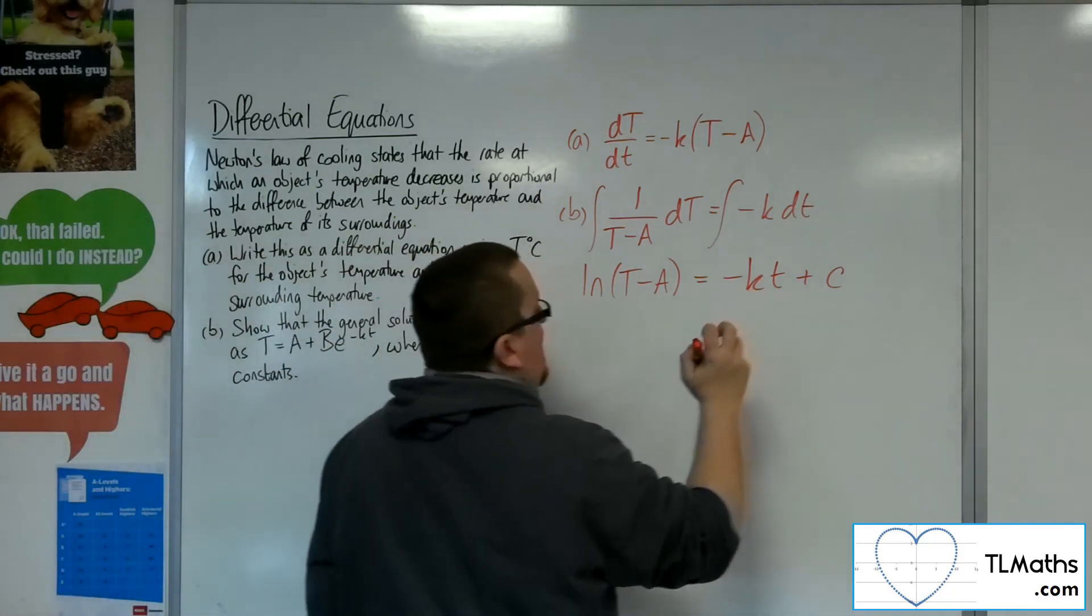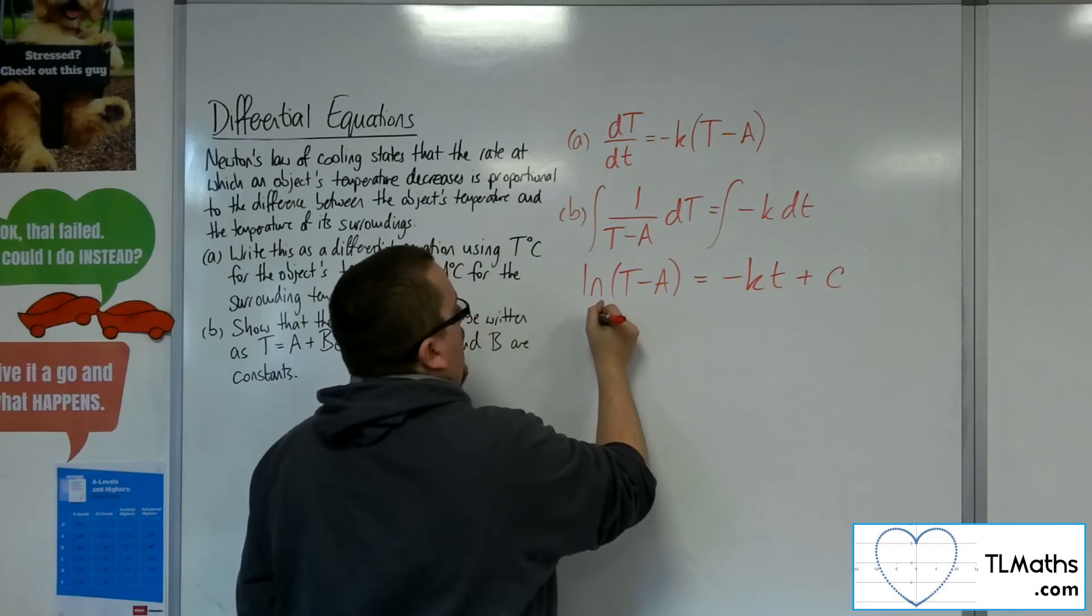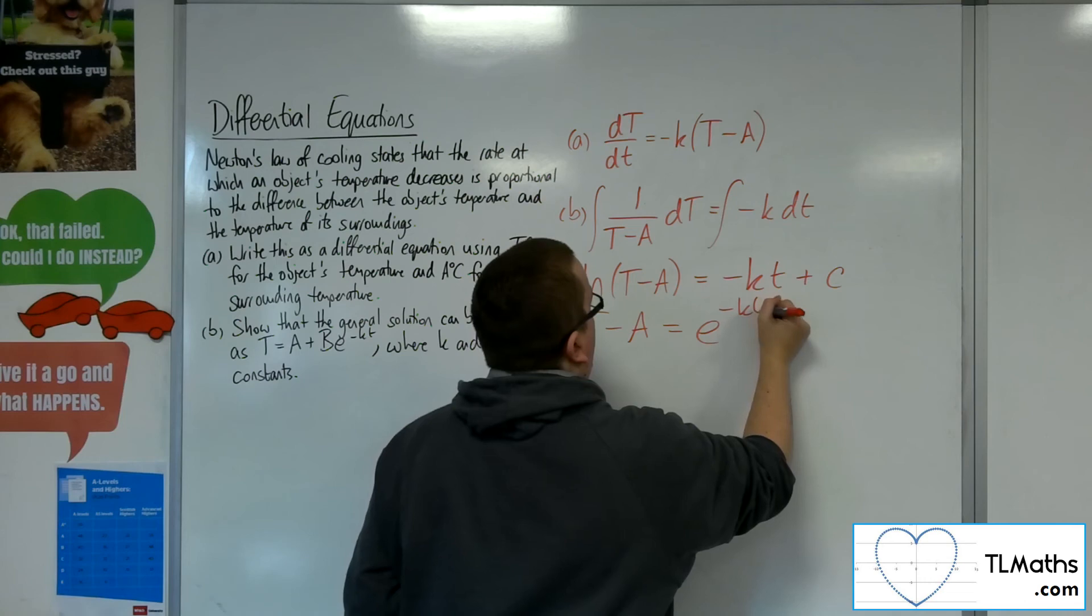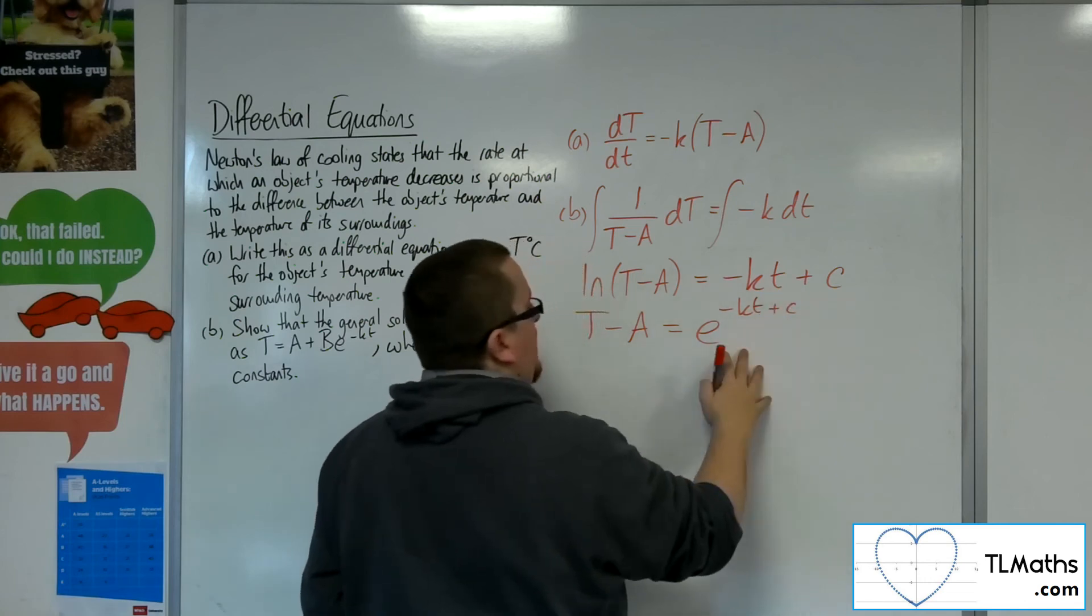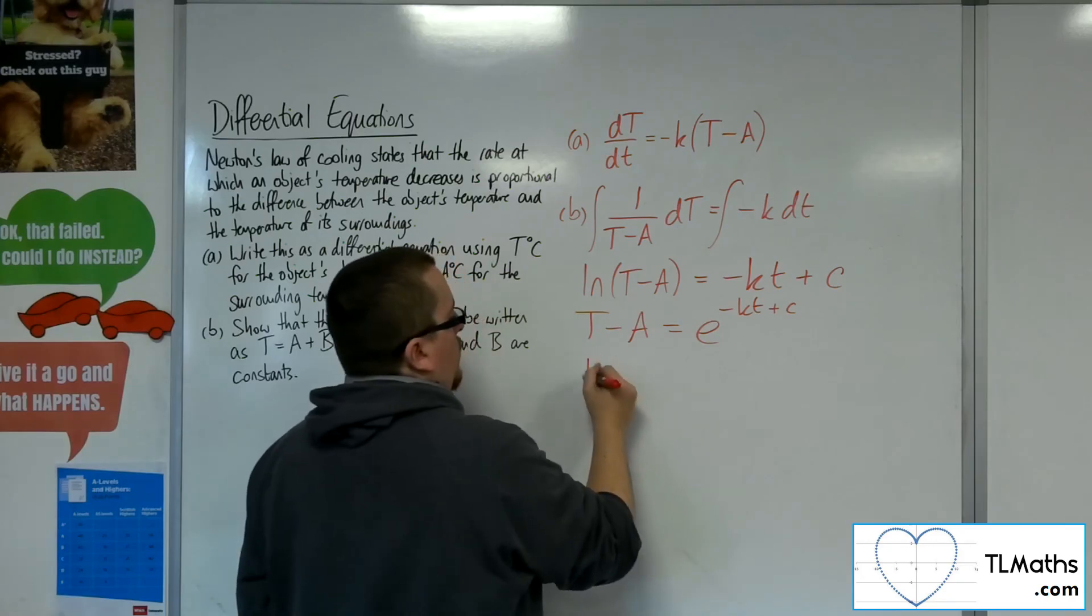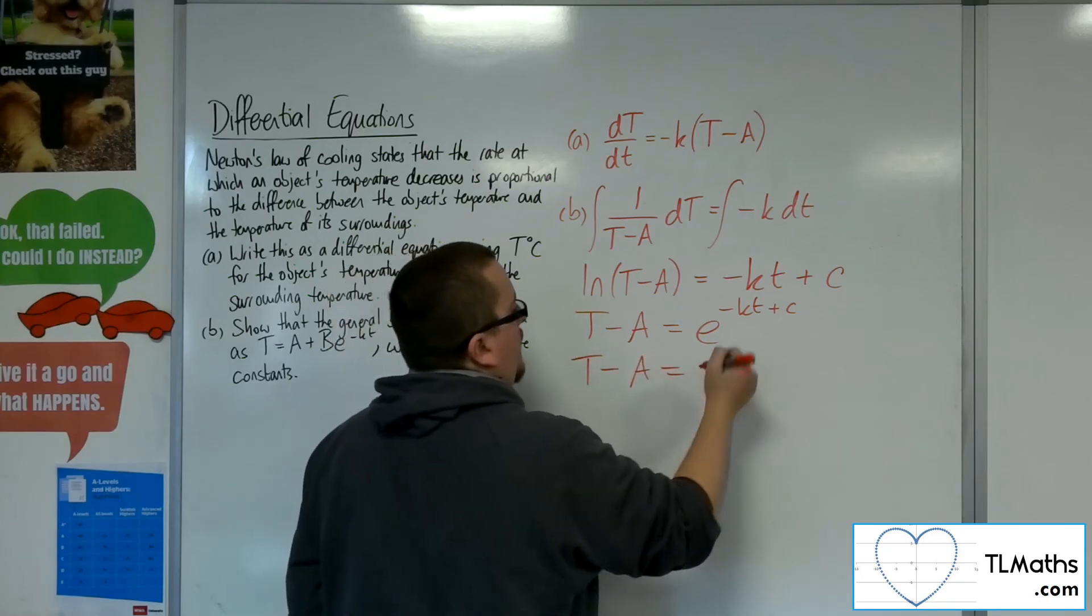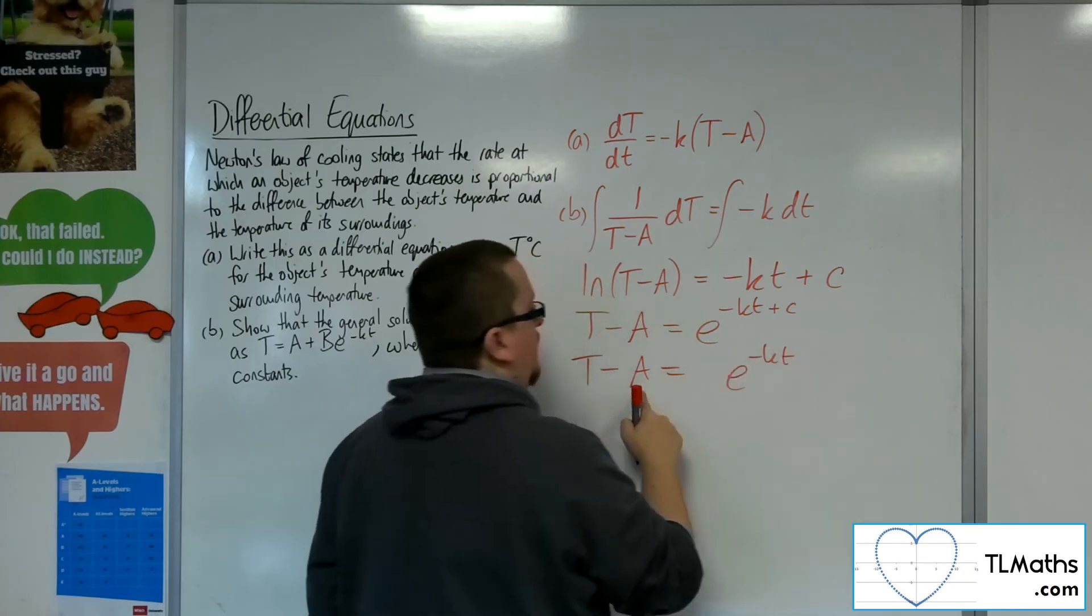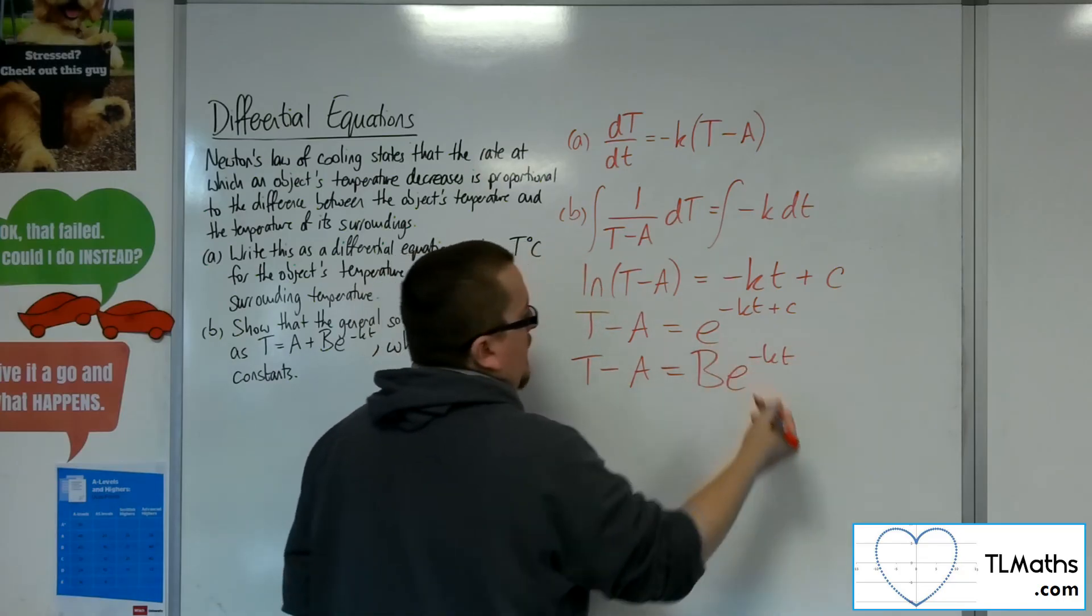Now, we can e both sides, so we'll be left with T minus A is equal to e to the minus KT plus C. But we know that that's e to the minus KT times e to the C, which we can write as some constant times e to the minus KT. Now, because A is taken, we'll bring in B here.